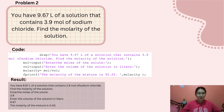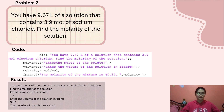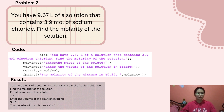The second problem is: you have 9.67 liters of a solution that contains 3.9 mol of sodium chloride. Find the molarity of the solution. You enter the moles of solute, which is 3.9, and the volume of solution in liters, which is 9.67. The molarity of the mixture is 0.40.